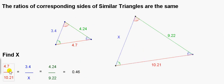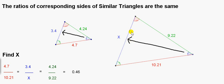We can use the fact that the ratios of corresponding sides of similar triangles are the same to find a missing side of one of the similar triangles. So if we want to find x, this side here, we have to find a side that corresponds to it in the second triangle. We see that side x and this side of length 3.4 are corresponding sides because both of them are opposite the same angle. This angle here is equal to this angle here.